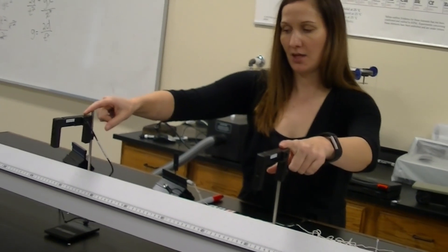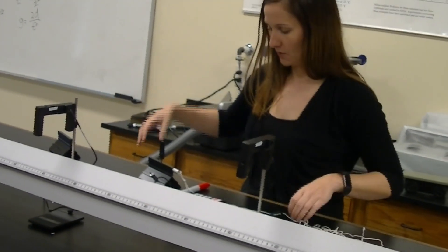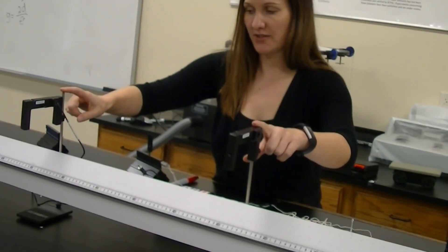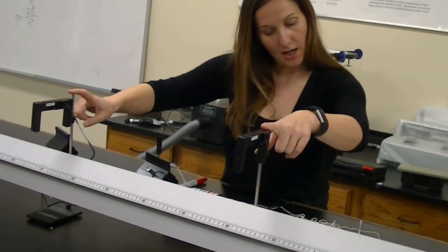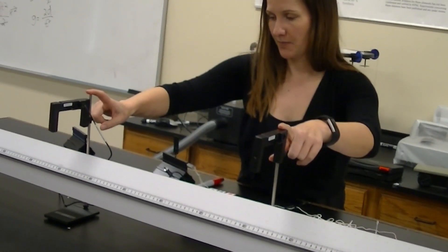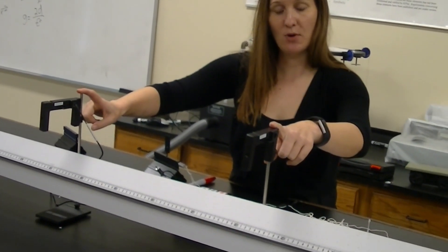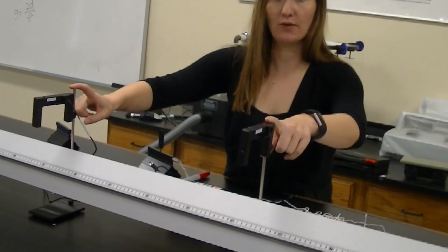So we have the air track, we also have two timers set up, two sensors that are going to time the travel of the glider. The two timers are set up 50 centimeters apart, so the distance on your data table will remain at 50 for every trial.